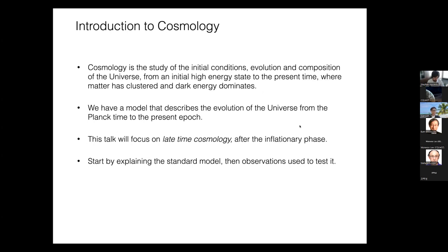After the inflationary period and reheating, I'll talk about an epoch of the universe where we have just the standard components: radiation, dark matter, baryons, and dark energy — everything classical, with gravity evolving according to general relativity. I'll describe the standard cosmological model and then follow up with the observations used to test it.